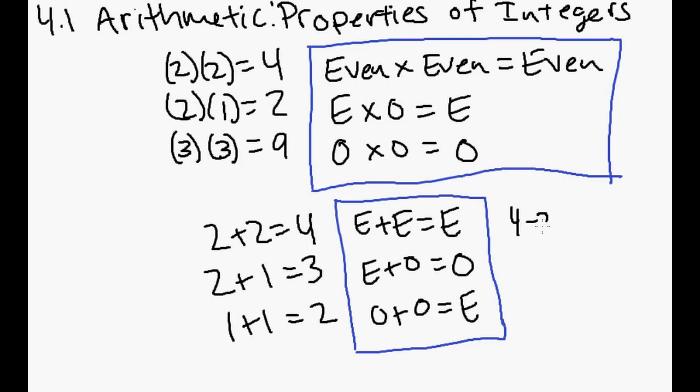Okay, so now let's go ahead and talk about subtraction. So let's say you have 4 minus 2, that gives you 2. If you have 3 minus 2, that gives you 1. And then if you have, which one am I missing? Oh, odd minus odd. 3 minus 1, that gives you 2.